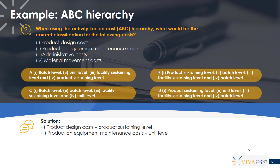Production equipment maintenance costs would generally be classified as a unit level activity. The more units produced on a piece of equipment, the more wear and tear it's exposed to. Producing one unit barely impacts operational efficiency, but every additional unit increases wear and tear, which increases future maintenance costs. So we classify this as a unit level activity — the more units produced, the more we'll spend on maintenance.